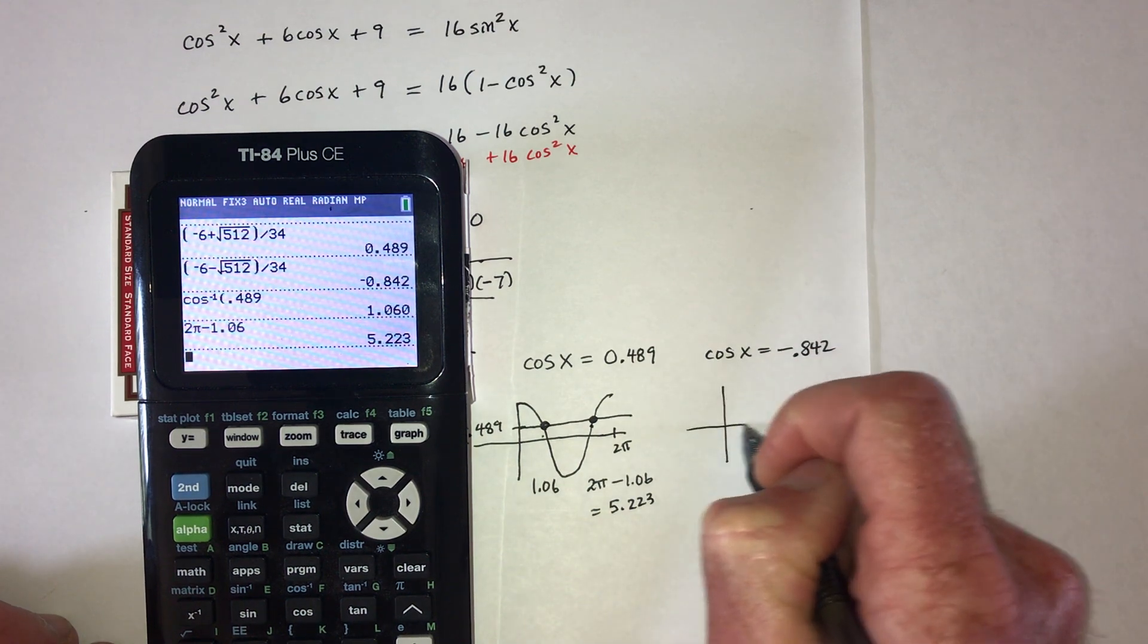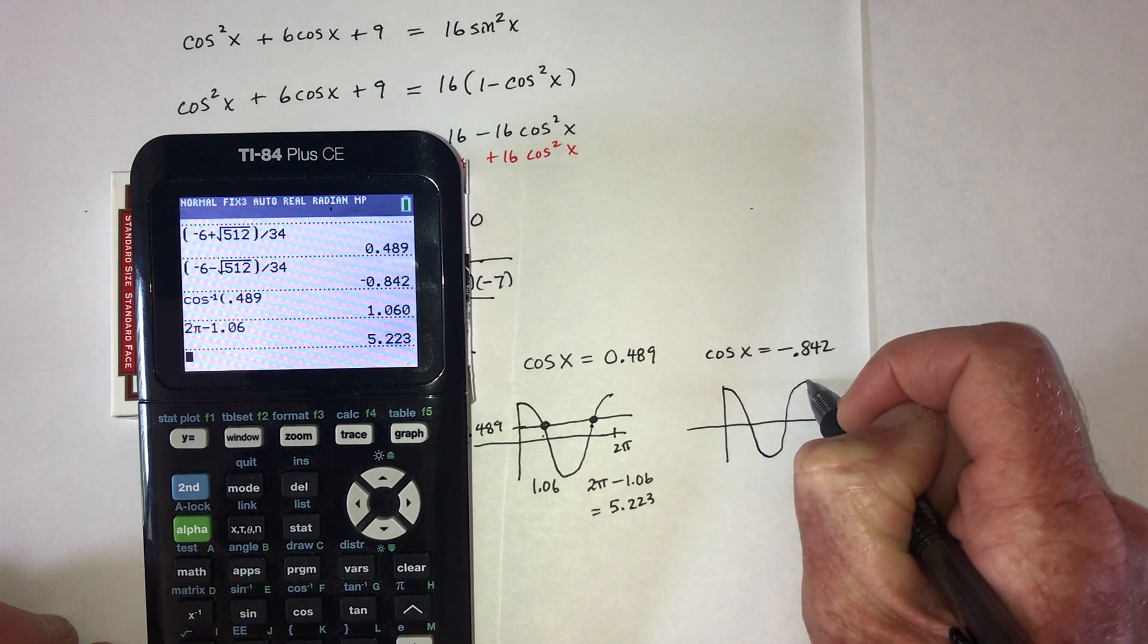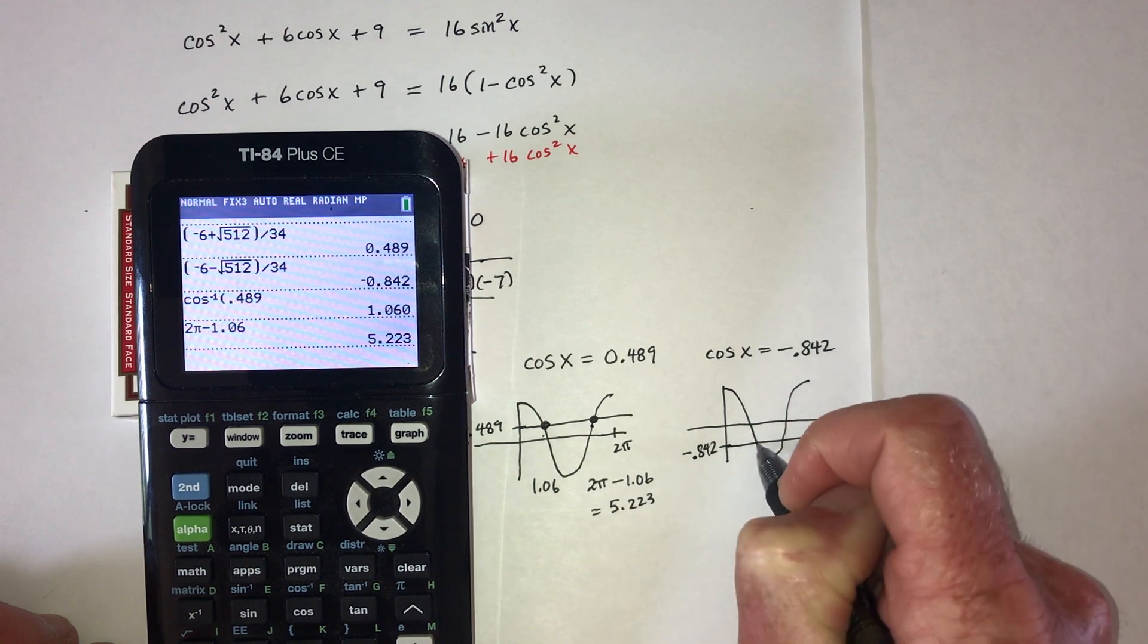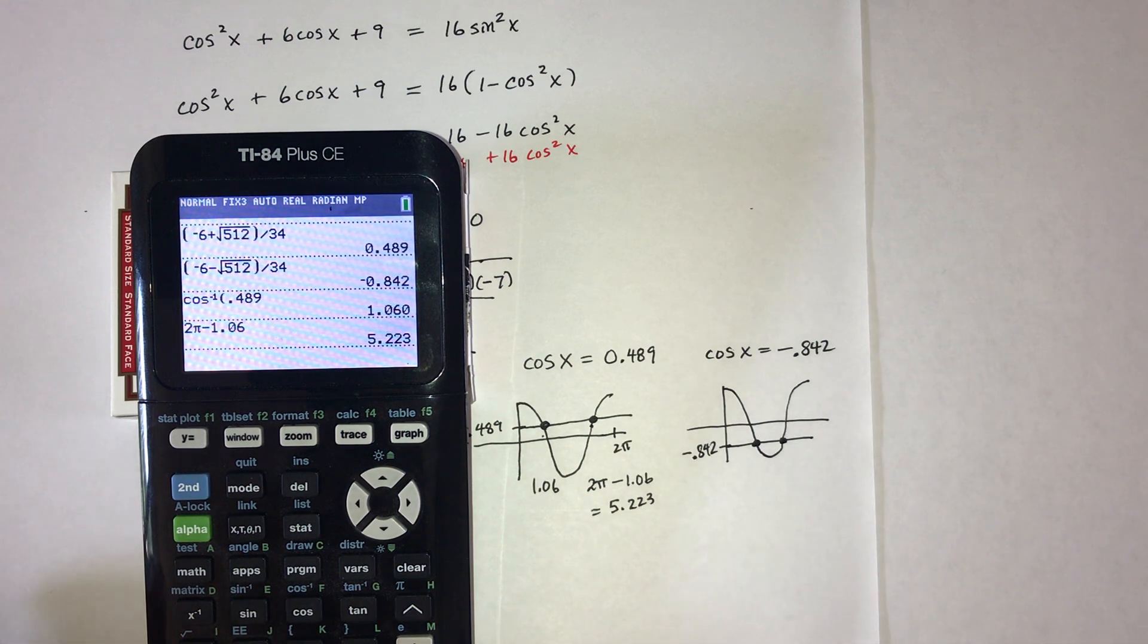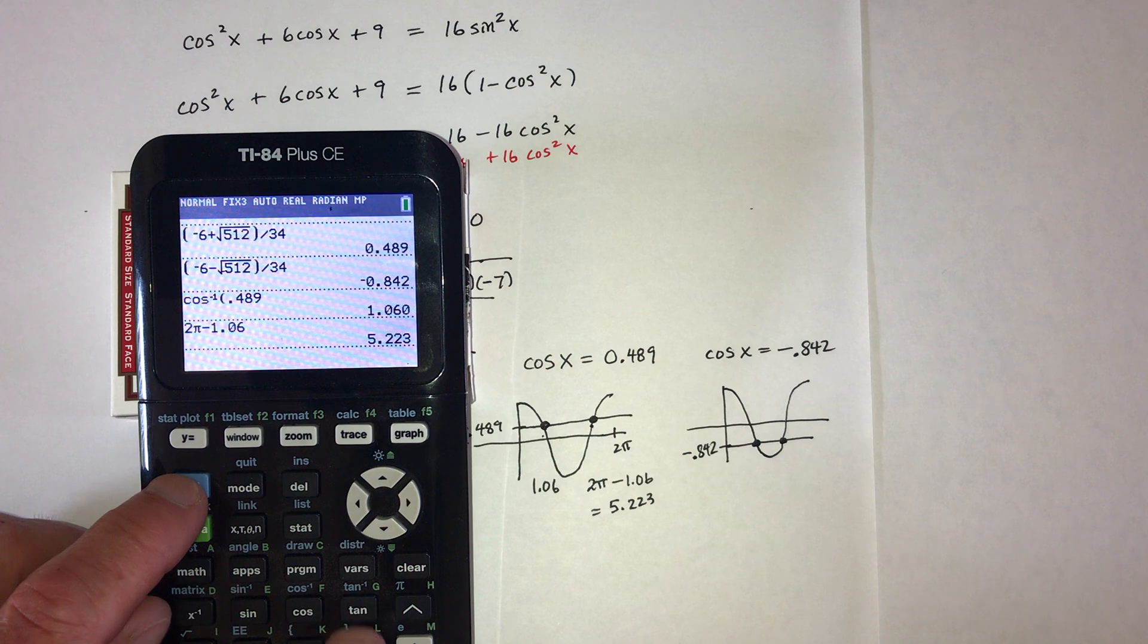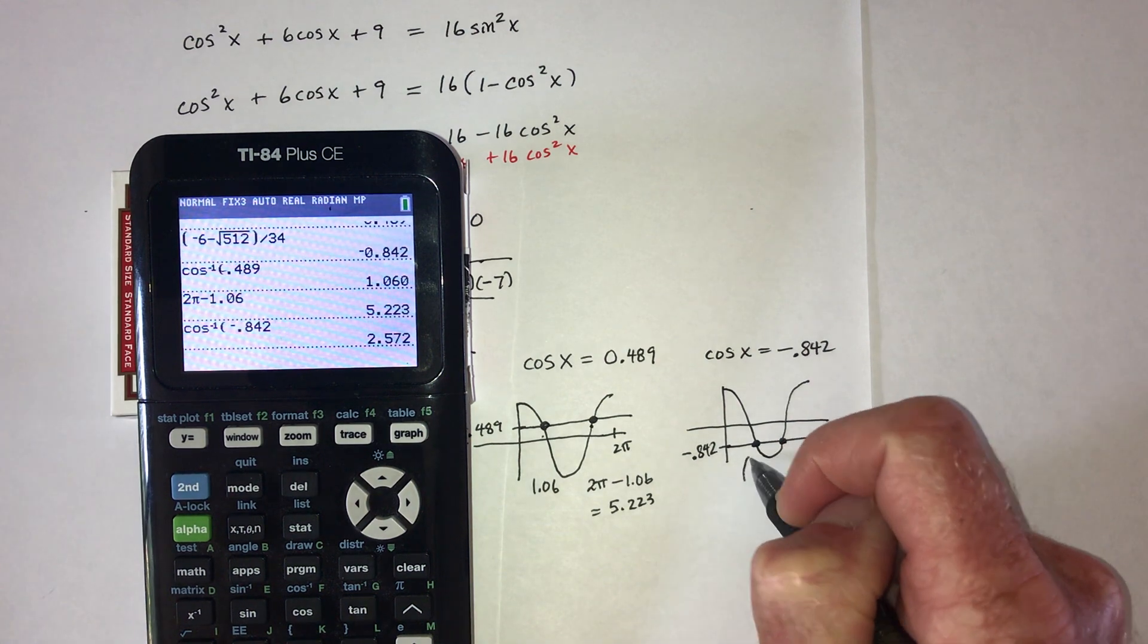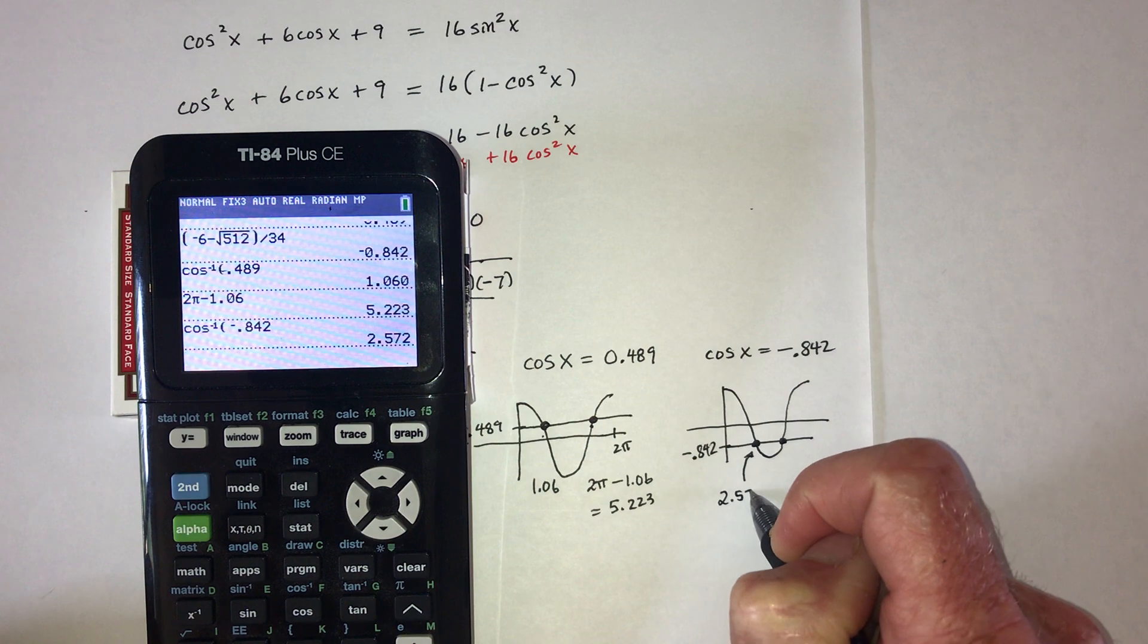Then move on to this one. So here's the cosine graph. And then here's negative 0.842. Go across and there's two solutions. So take cosine inverse of negative 0.842. And so this one would be 2.572.